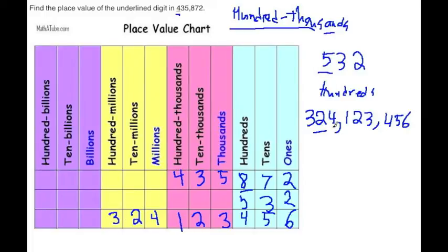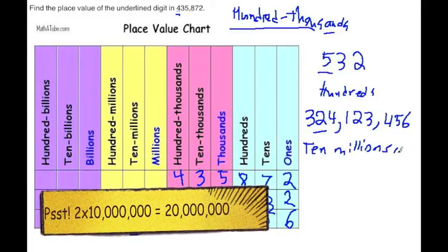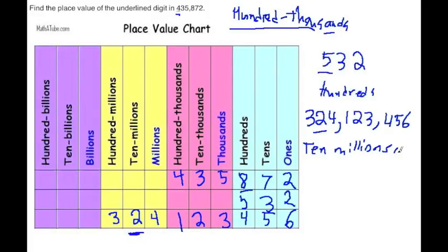We're trying to find the place value of the underlined two, and that happens to be this number here. We look at this column and it says ten millions, so our answer for the place value would be ten millions. And there you have it — I hope this helped and I'll see you during the next lesson. Thank you.